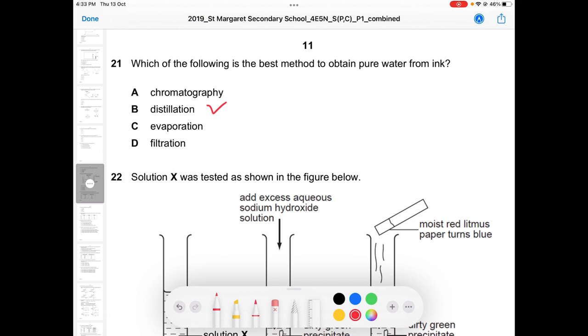The keyword here is obtain pure water from ink. It's not just about separation, you separate and you must collect. Chromatography is only separating the components, but you cannot collect the components from the chromatogram. That's why A is not correct.